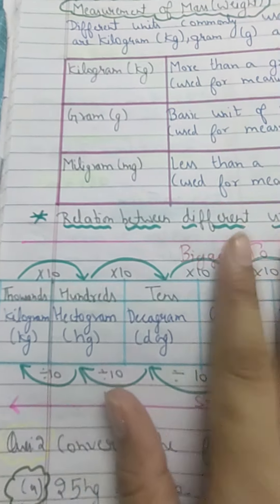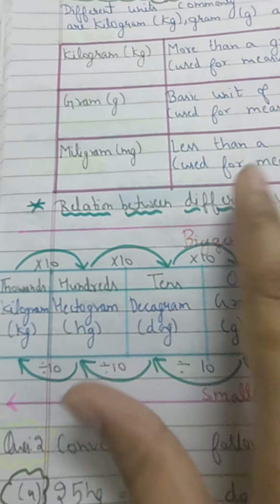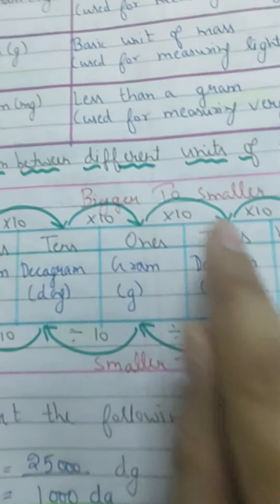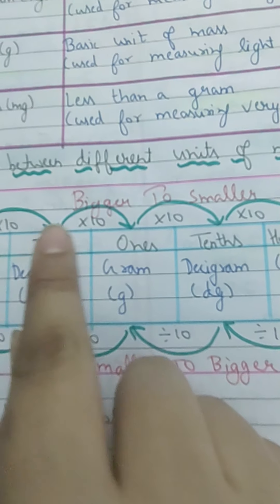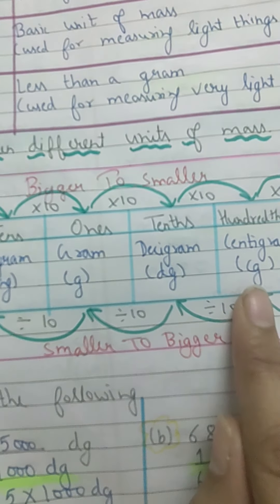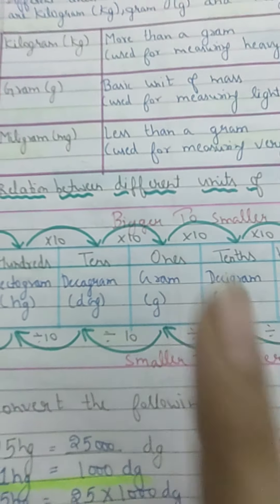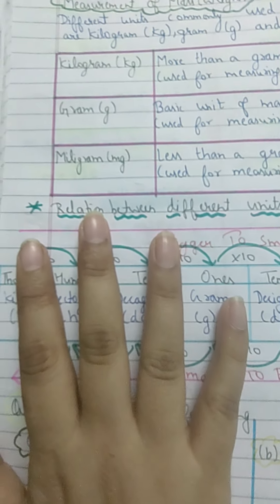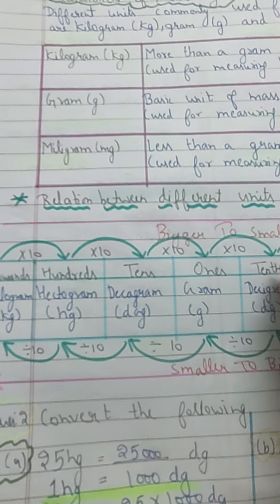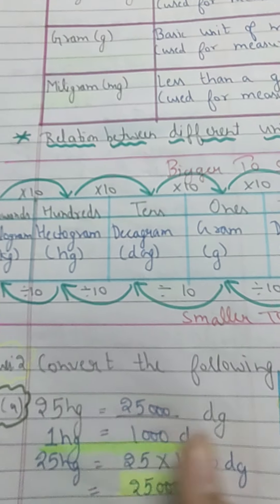The same concept we used for length applies here as well. I'm not going to discuss too much since we have already done many questions related to it. Today we are going to learn how to convert from bigger to smaller units. In the next class, we will learn how to go from smaller to bigger. Our first question is 25 hectogram to decigram.